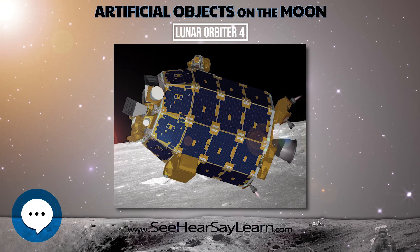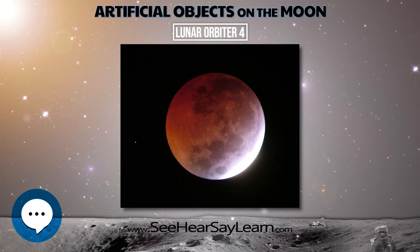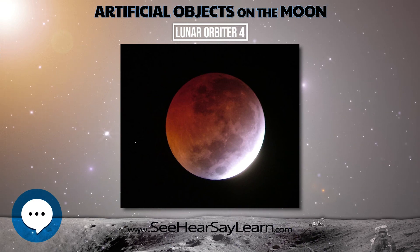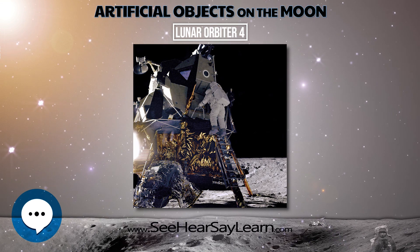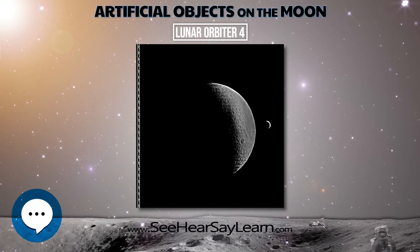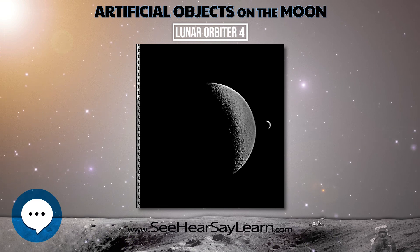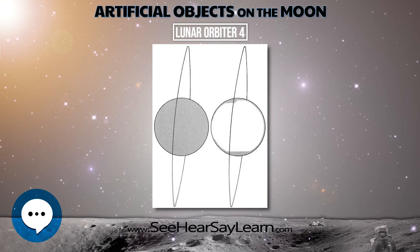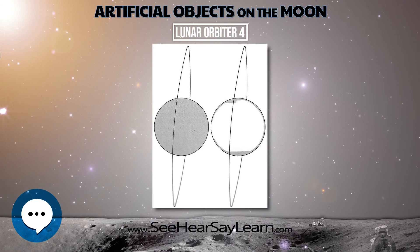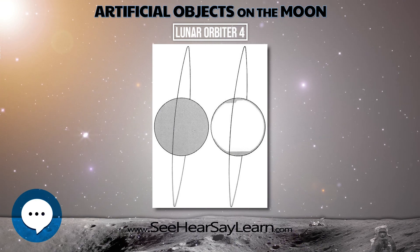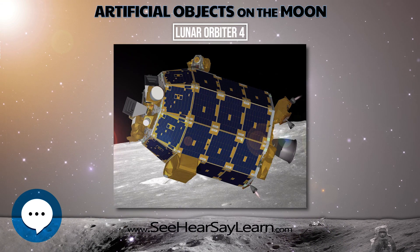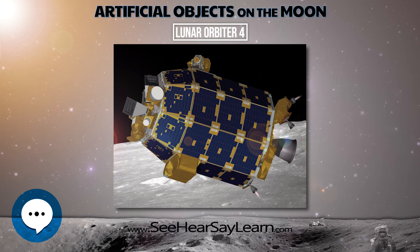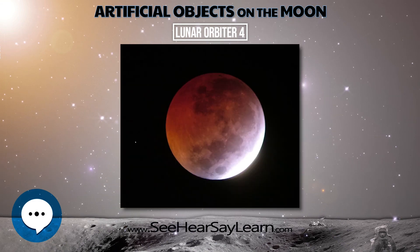Despite problems with the readout drive, the entire film was read and transmitted. The spacecraft acquired photographic data from May 11 to 26, 1967, and readout occurred through June 1, 1967. The orbit was then lowered to gather orbital data for the upcoming Lunar Orbiter 5 mission. A total of 419 high-resolution and 127 medium-resolution frames were acquired, covering 99% of the Moon's nearside at resolutions from 58 to 134 meters.